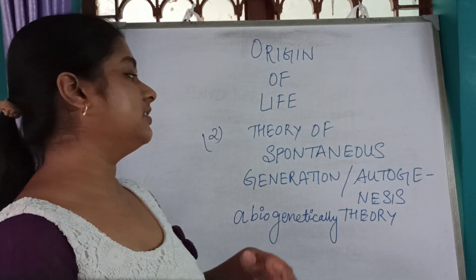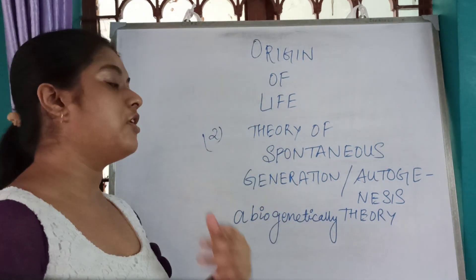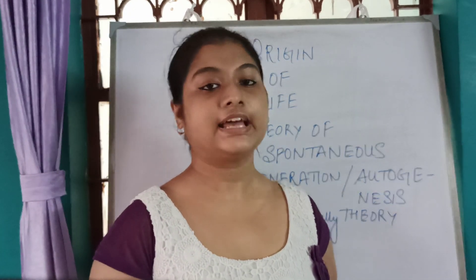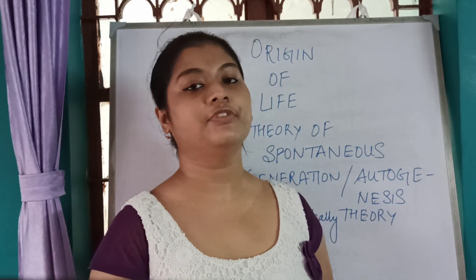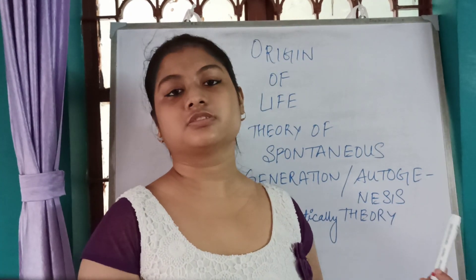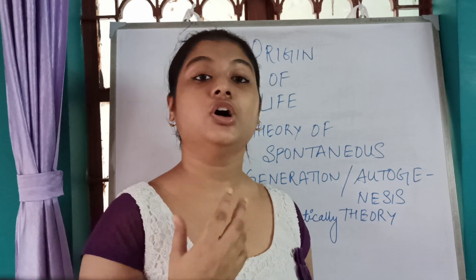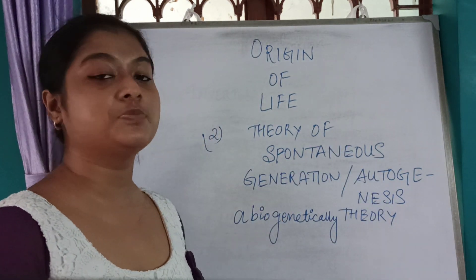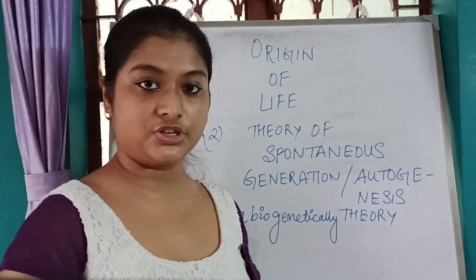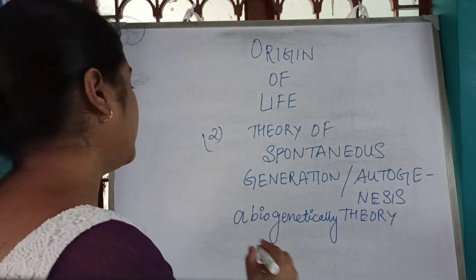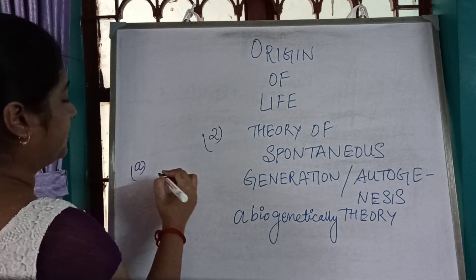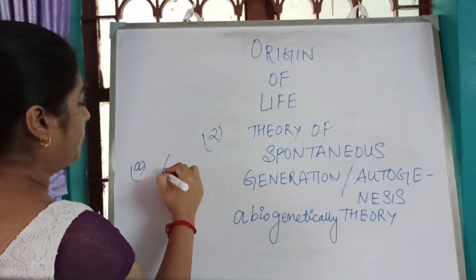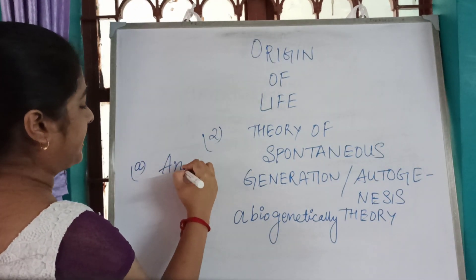Based on this autogenesis theory, various philosophers and scientists proposed their own thoughts. The first was the Greek philosopher Anaximander, who maintained that plants and animals originated from inorganic substances.